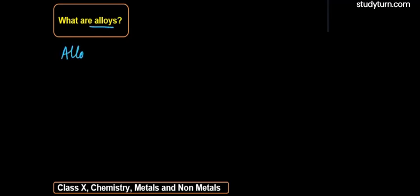Alloys के बारे में बात करते हैं कि alloys क्या होते हैं. So basically alloys जो है, वो होमोजीनियस मिक्सर होता है. Alloy, it is a homogeneous mixture.